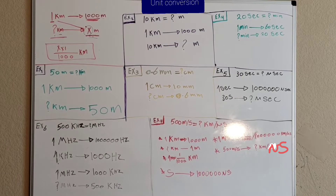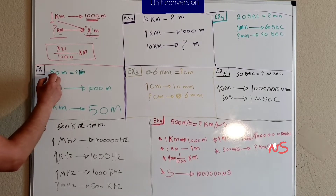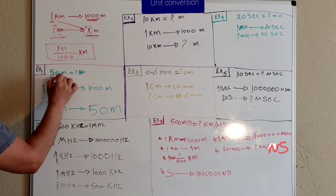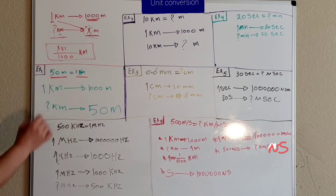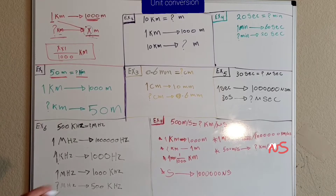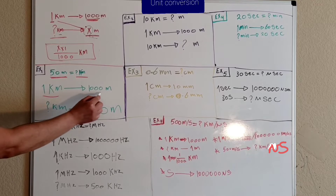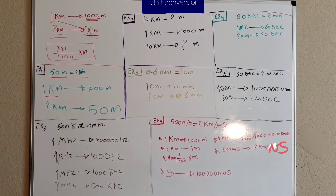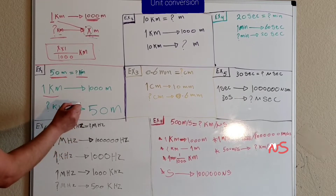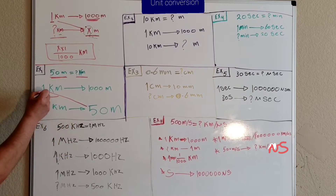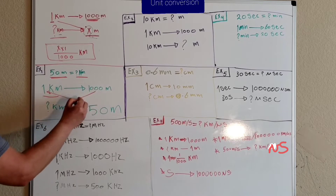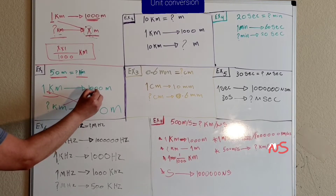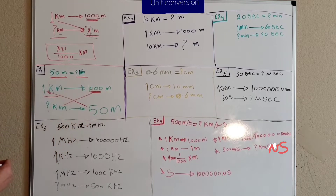Let's take an example: how to convert 50 meters to kilometers. 50 meters equals how many kilometers? We write it this way — one kilometer equals one thousand meters — so how many kilometers are in 50 meters? We multiply 50 by one and divide it by one thousand.